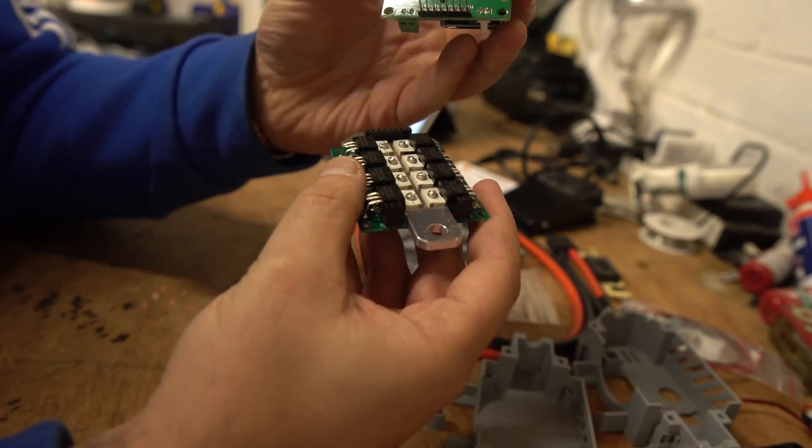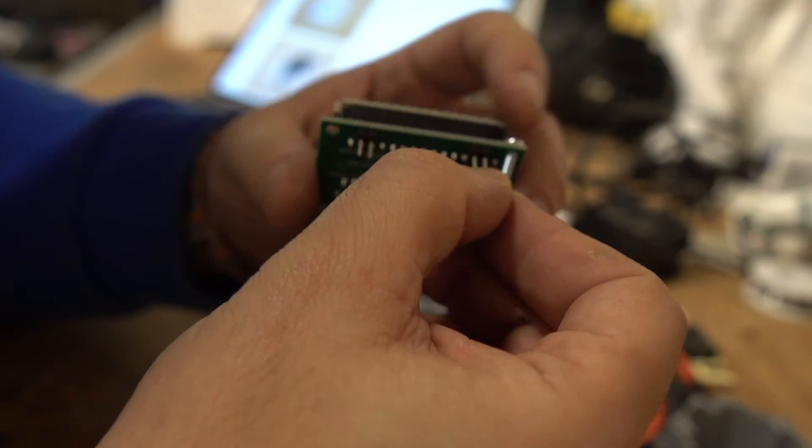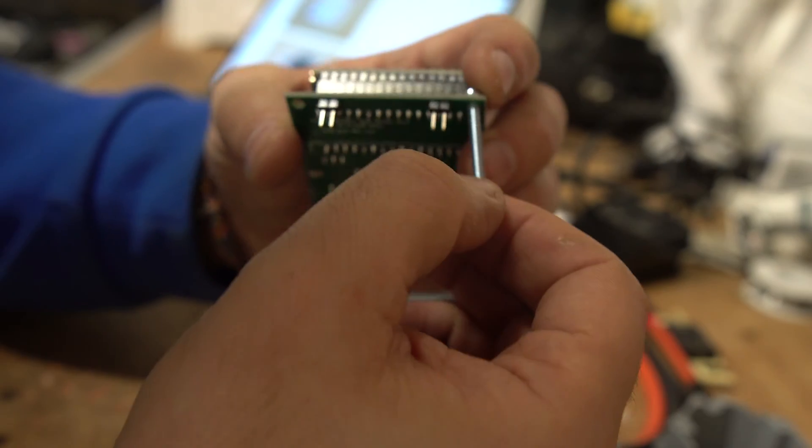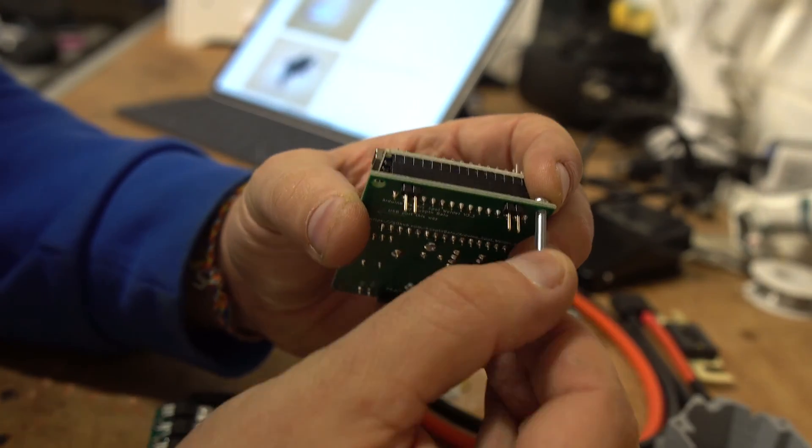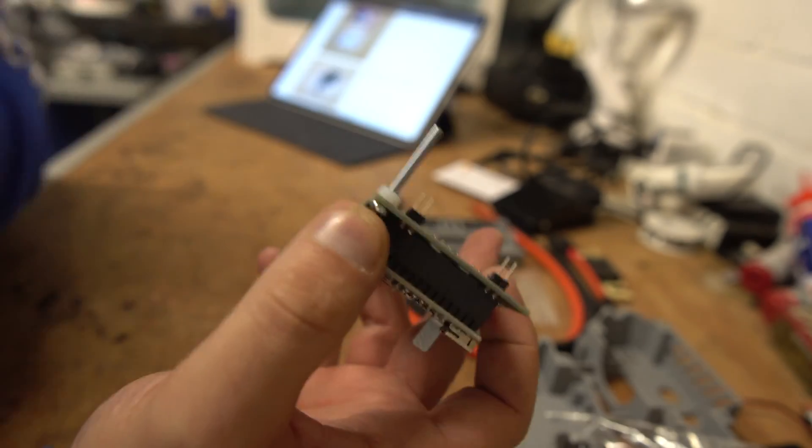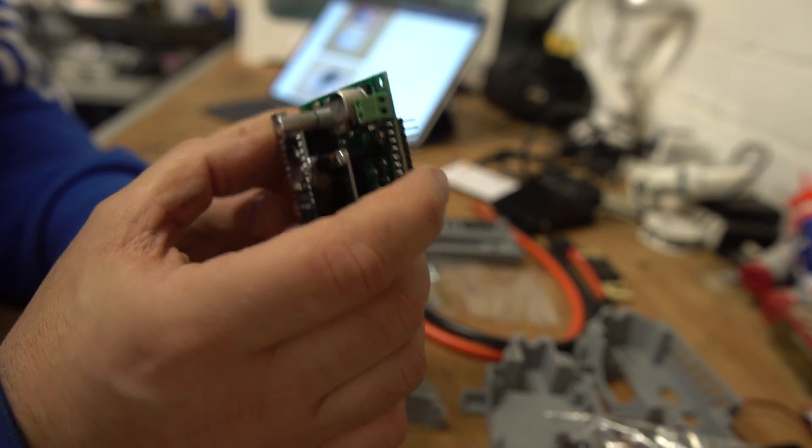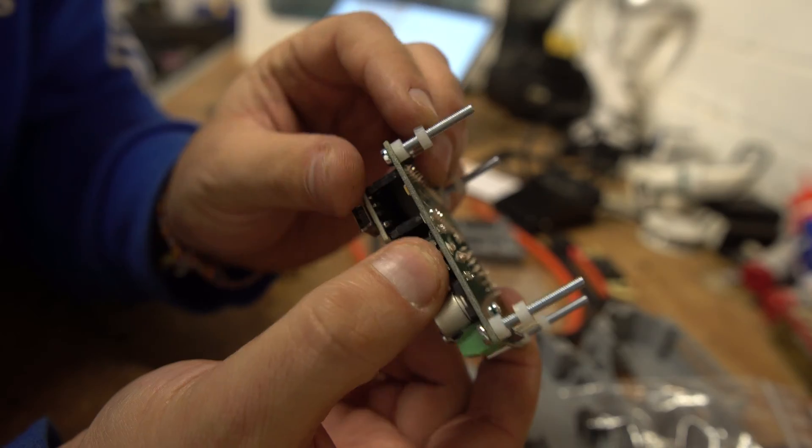And it's pretty obvious which way around it goes so we can't actually mess that up. We're going to insert these four M3 25 millimeter screws or bolts and just secure them with a nylock washer. All right, so we've got three more of those to do and I'll see you in a sec.